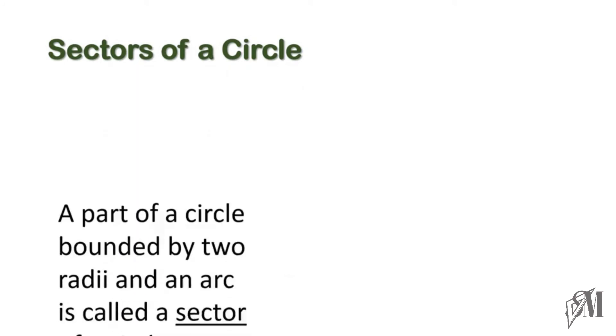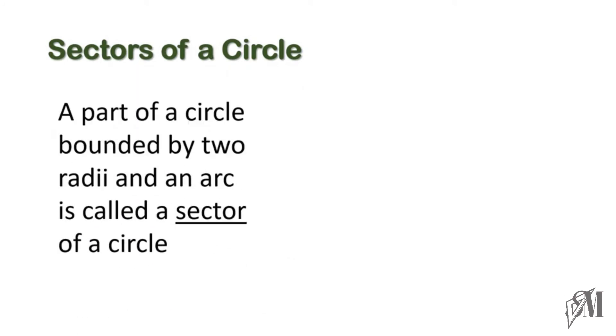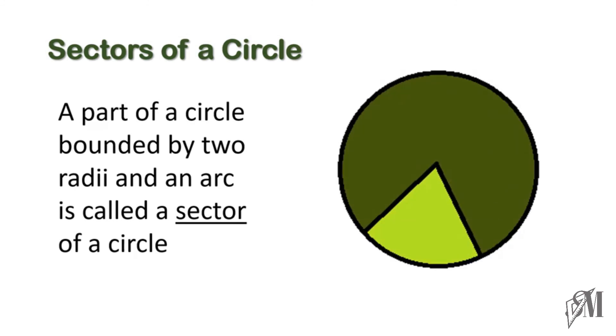And the next part we are going to look into is sectors of a circle. What are these sectors? A part of a circle bounded by two radii and an arc is called a sector of a circle. Now look into this diagram. Here you can see there are two radii drawn in the diagram, and these two radii divide the circle into two parts. The larger part here is called the major sector, whereas the smaller region is called the minor sector.